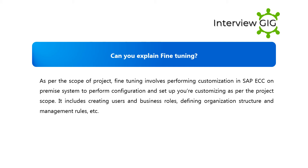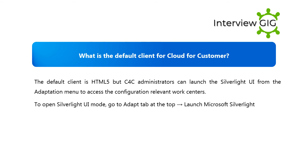Can you explain fine tuning? As per the scope of a project, fine tuning involves performing customization in SAP ECC on-premise system to perform configuration and set up your customizing as per the project scope. It includes creating users and business roles, defining organization structure and management rules, etc.